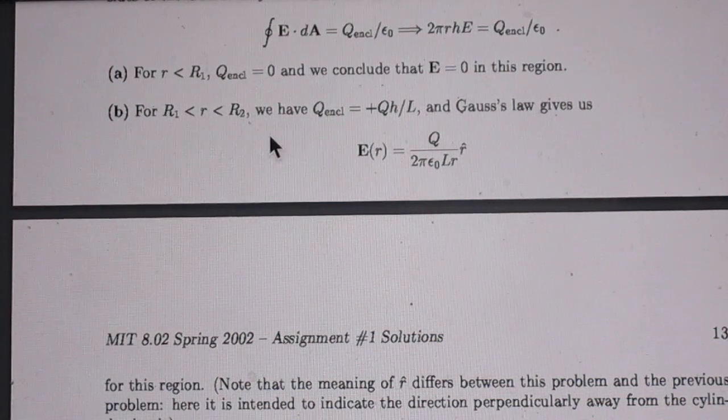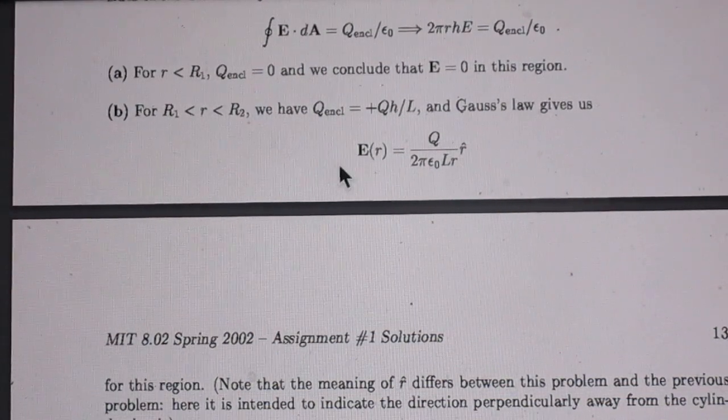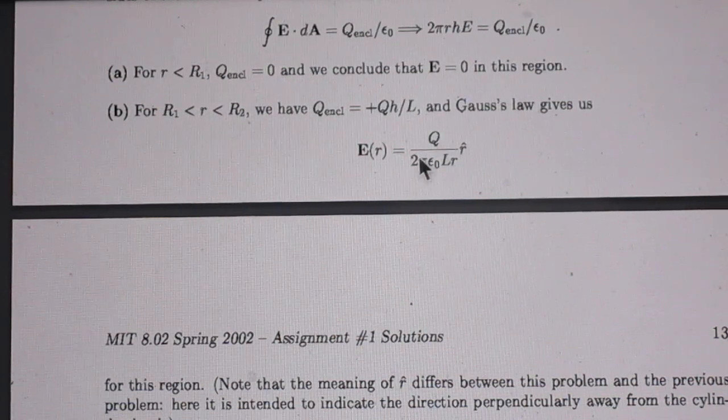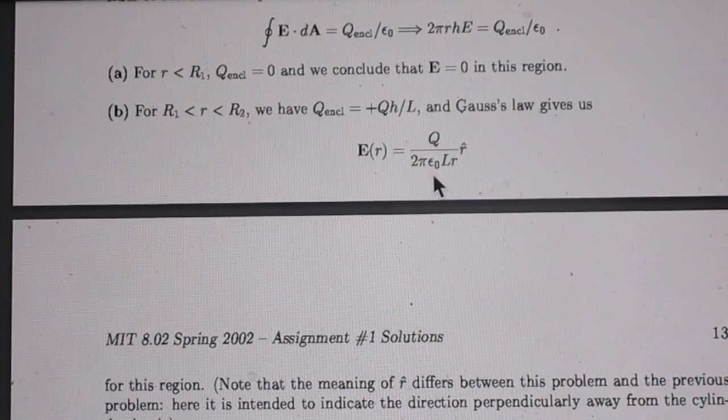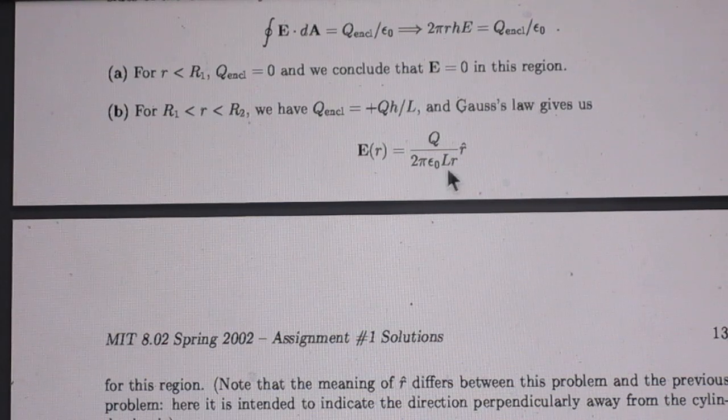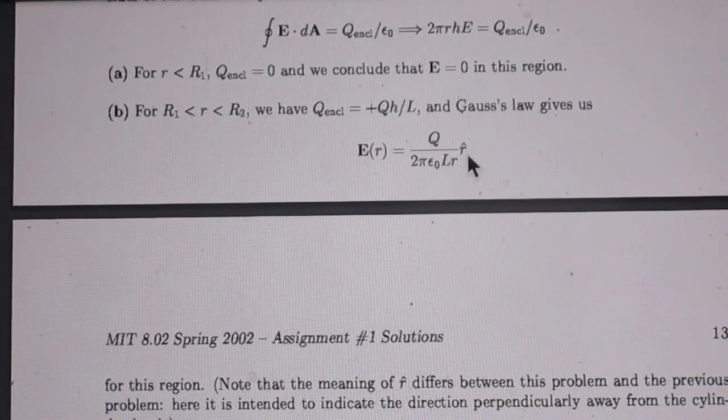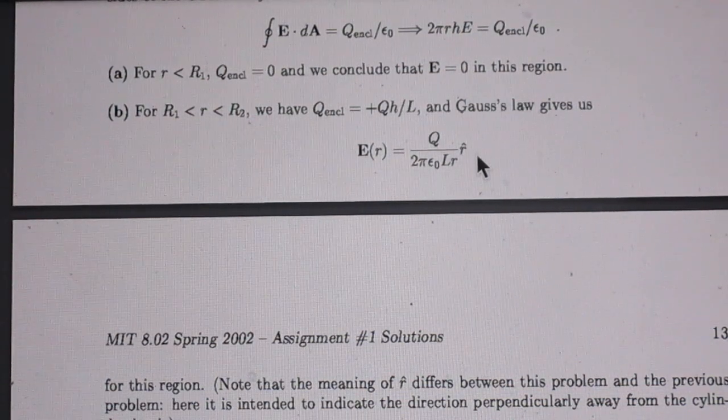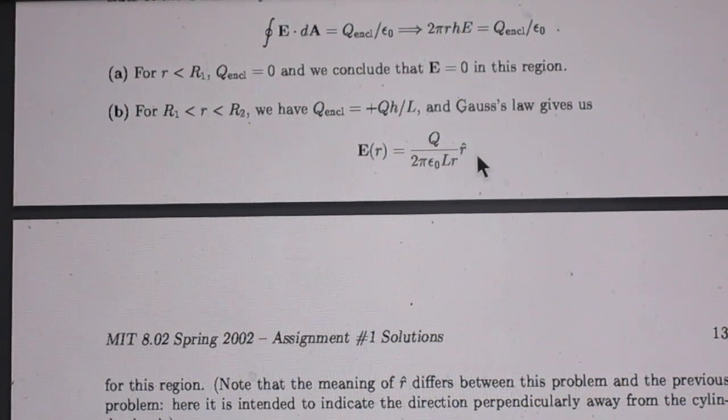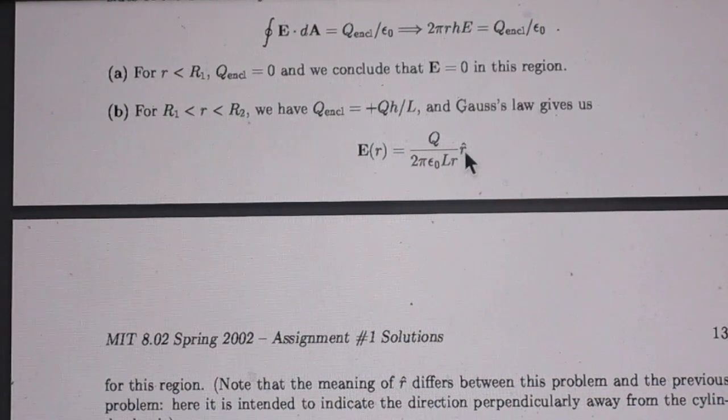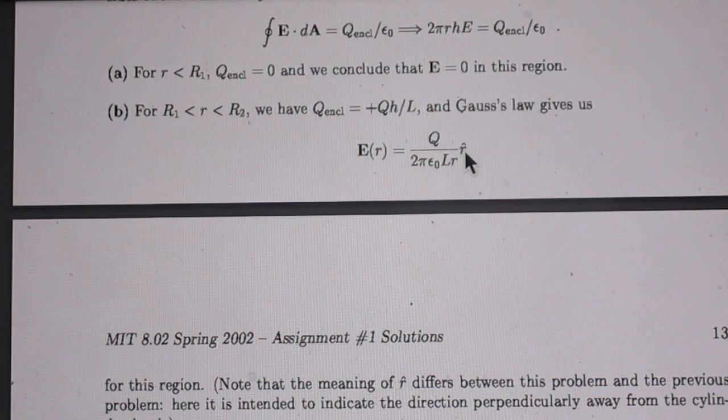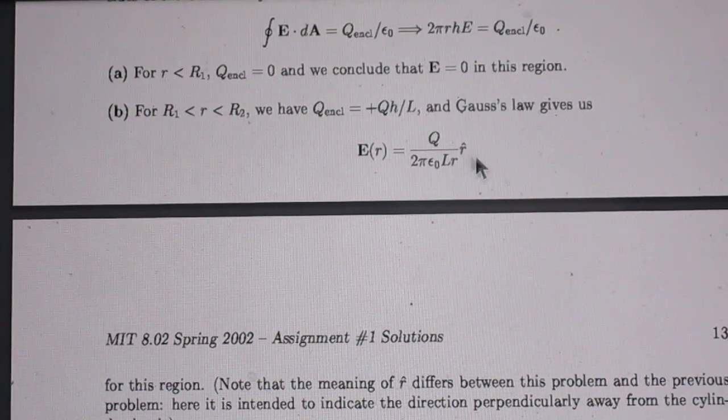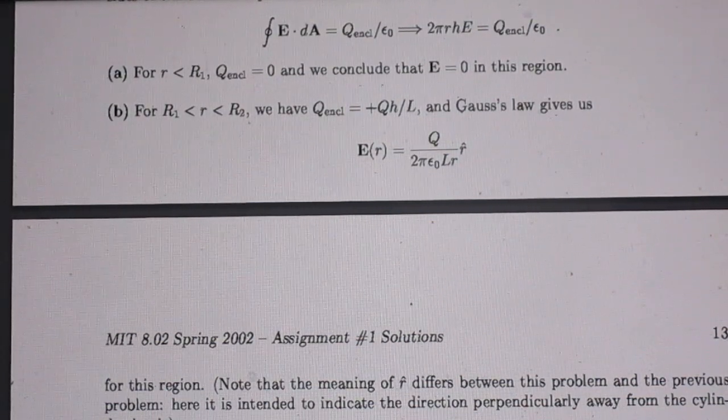So now you substitute that in Gauss's law, and you find that Er is Q divided by 2πε₀L times r in the direction r-hat. R-hat means that it is radially outwards. That indicates that this is the unit vector outwards.